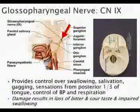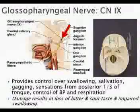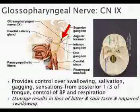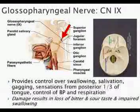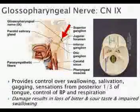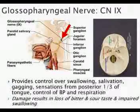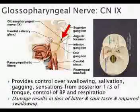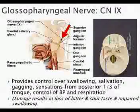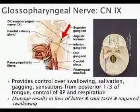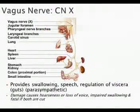CN9, the glossopharyngeal nerve, passes through the jugular foramen. It provides sensation to the posterior third of the tongue, helps with swallowing, and is also involved in some control of blood pressure and breathing.